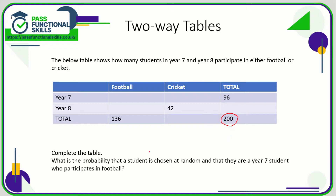Now we can complete the table by just using logic. If there are 200 people in total and 96 are in year seven, then the remainder are in year eight. So that's 200 takeaway 96, which is 104. Now that we've got 104, we can work out how many year eights played football. If 42 of them played cricket, then 104 minus 42 tells us that 62 did football. If 62 did football out of a total of 136, we can work out how many year sevens did football — that's 136 minus 62, which is 74.